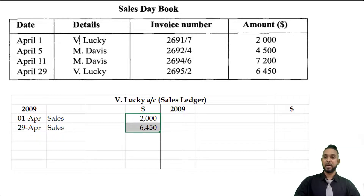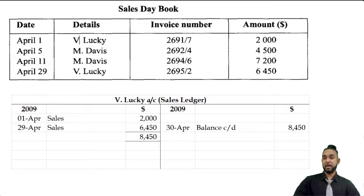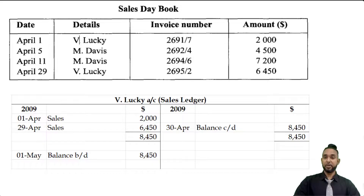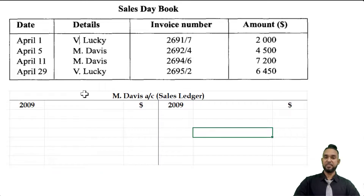Now we balance off V Lucky's account. There are no entries on the credit side, so we put 'balance carried down' on the credit side equal to the total on the debit side, which is $8,450. The balance carried down is $8,450 and is brought down on the debit side like a regular asset. Now we pull up M Davis's account — M Davis is also a debtor, so their personal account is also found in the sales ledger.